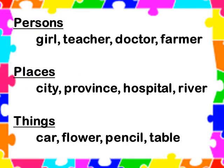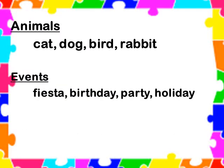Here are examples of common nouns. Say it with me. Name of persons like girl, teacher, doctor, farmer. Name of places like city, province, hospital, river. Name of things like car, flower, pencil, table. Name of animals like cat, dog, bird, rabbit. Name of events like fiesta, birthday, party, holiday.